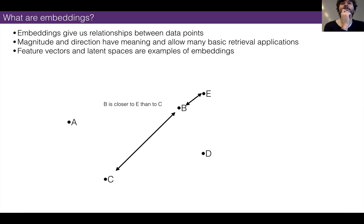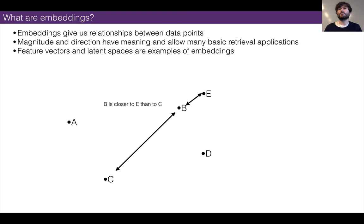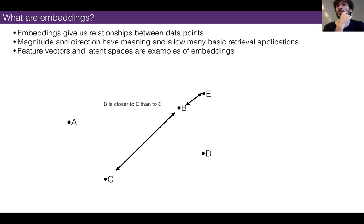A student asks: is embedding in a two-dimensional space of similarity what T-SNE is? Yes — T-SNE embeds in a two-dimensional space, and it does so in a particular way. There are multiple ways of embedding points into feature space. T-SNE is preferred for two and three dimensions for visualization because it has properties that are very good for that. A follow-up: how do you avoid losing information when reducing from 4,096 dimensions to lower dimensions? You can't avoid it entirely, but there are ways to lose as little as possible — principal component analysis does exactly that.